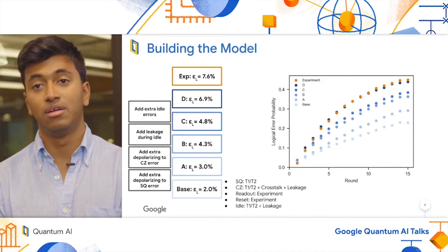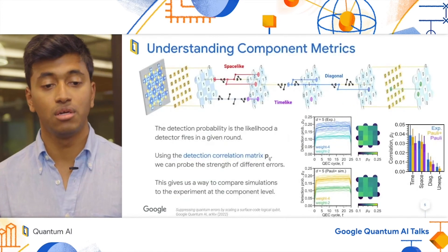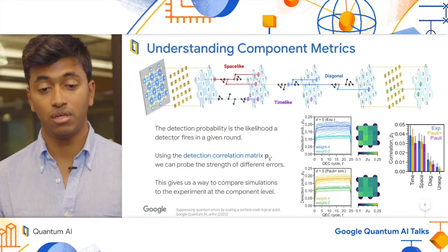Next, I want to look at our modeling for the experiment we're actually presenting in our paper. Here, I want to first look at the detection probability plots shown in the middle. You can see that detection probability, as Kevin mentioned earlier,